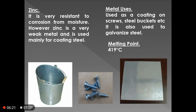Now, zinc. It is very resistant to corrosion, but it is a very weak metal. That's why it is mostly used for coating steel. Its application includes use as a coating on screws, steel buckets, etc. It is also used to galvanize steel. Its melting point is 419 degrees Celsius.